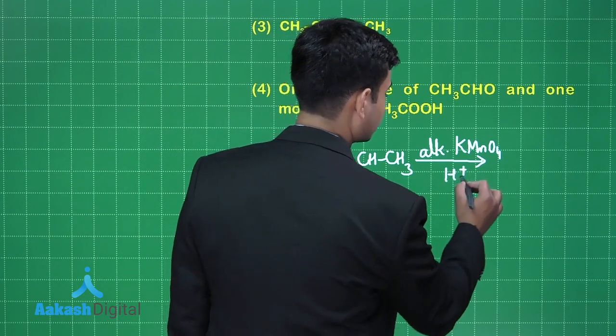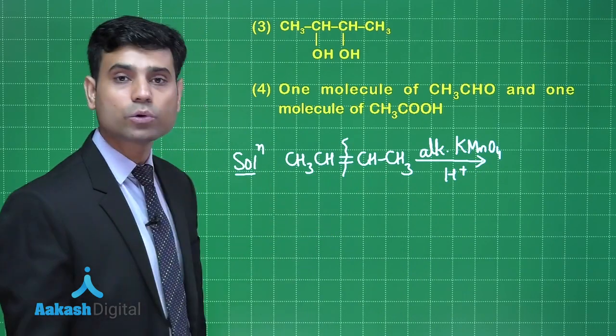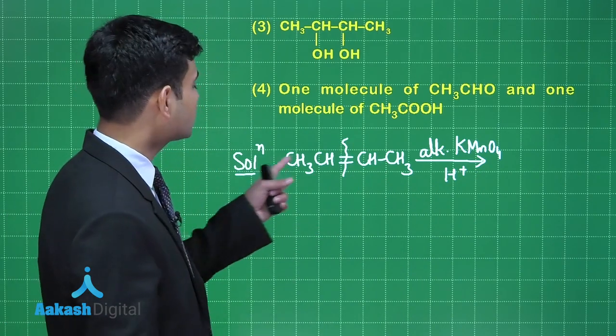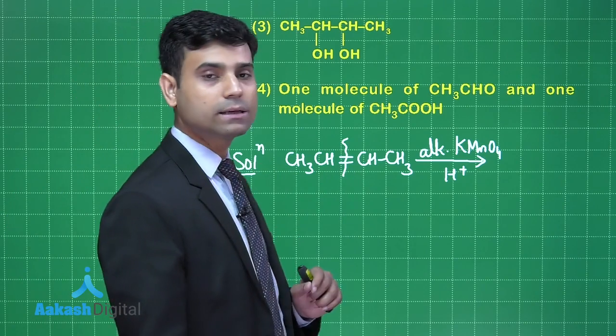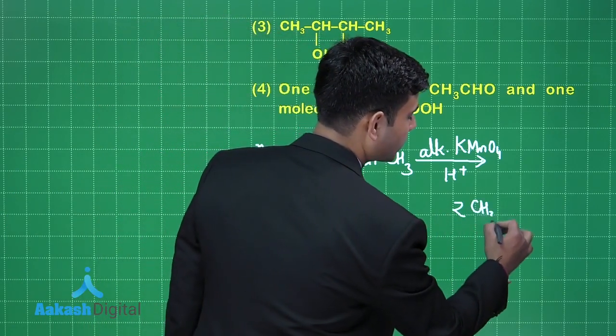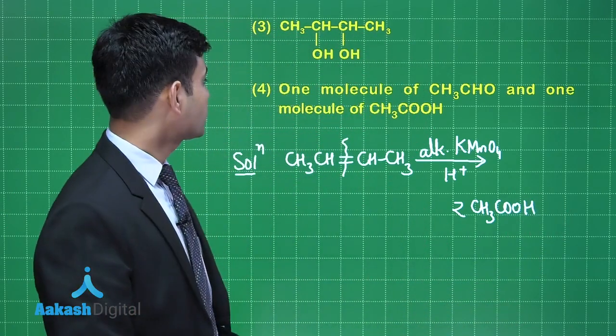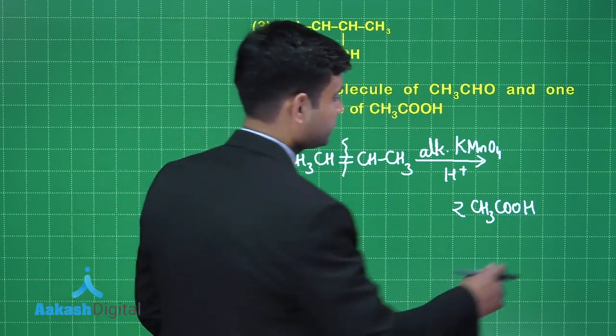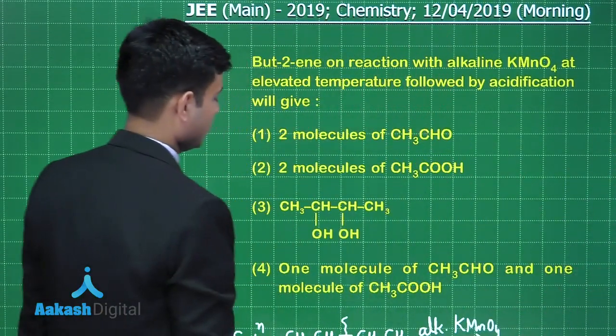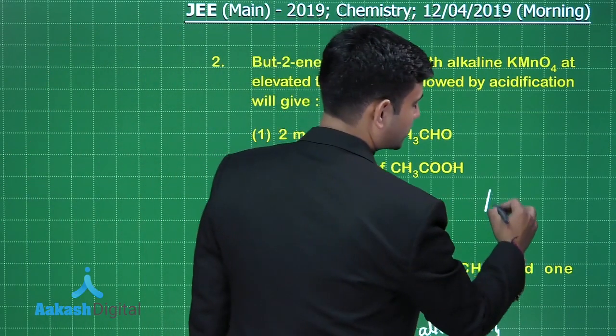We will break this bond from here and form acid on both these sides. So this will be CH3-COOH and CH3-COOH. So formation of two molecules of acetic acid will take place. Let's go through the options to find the right answer.